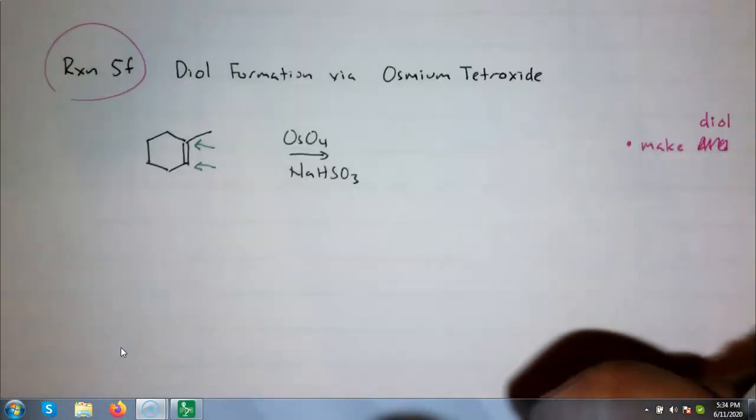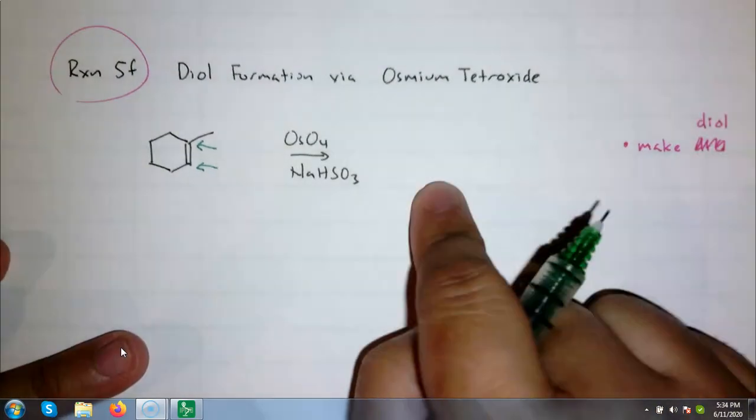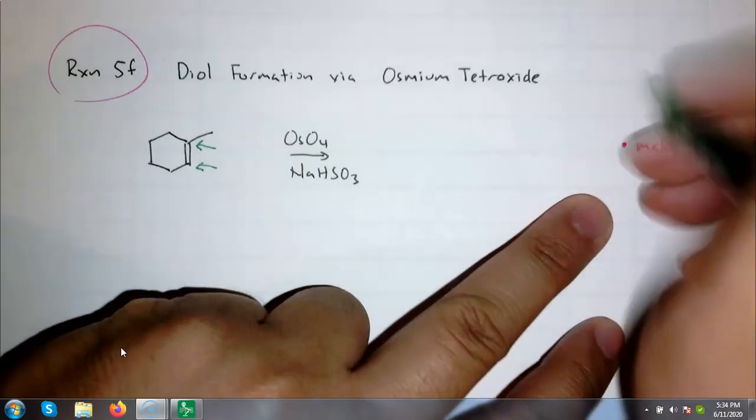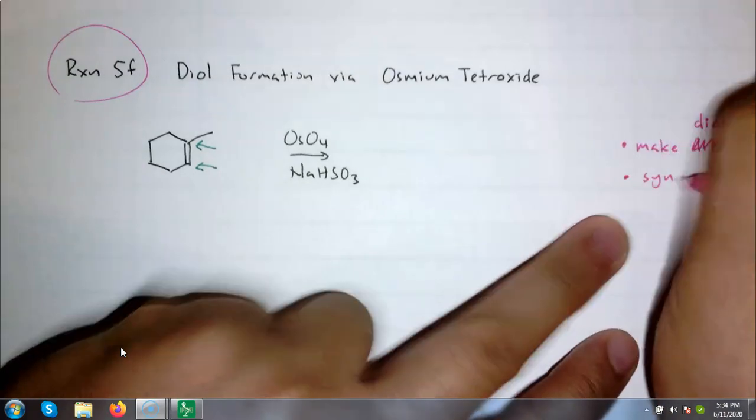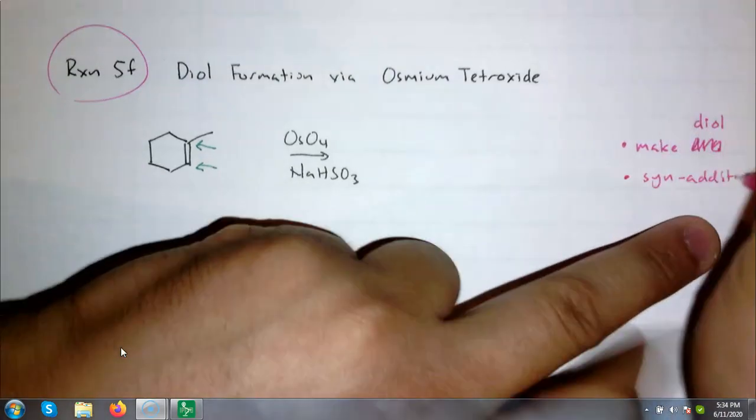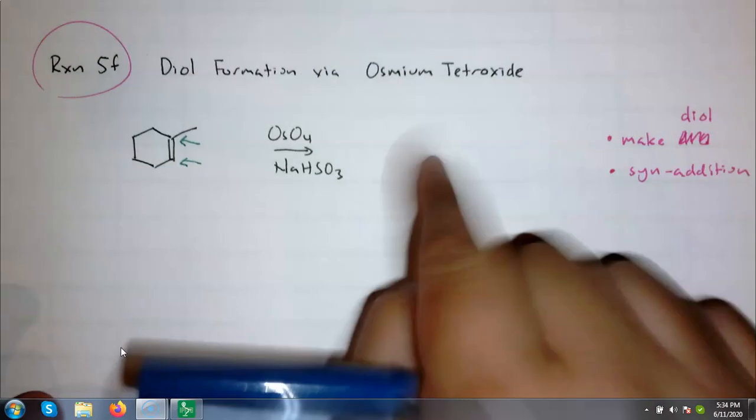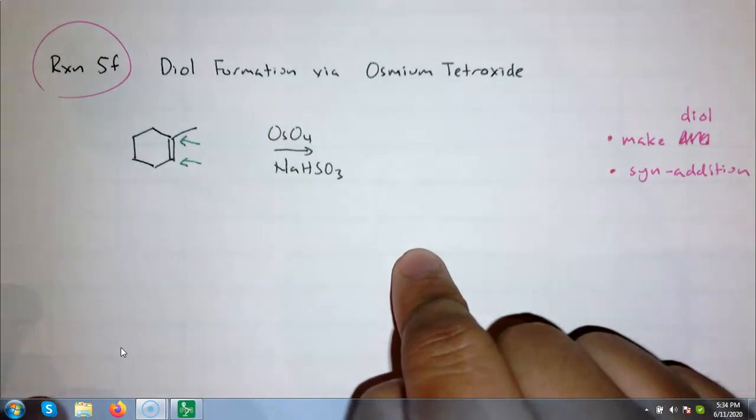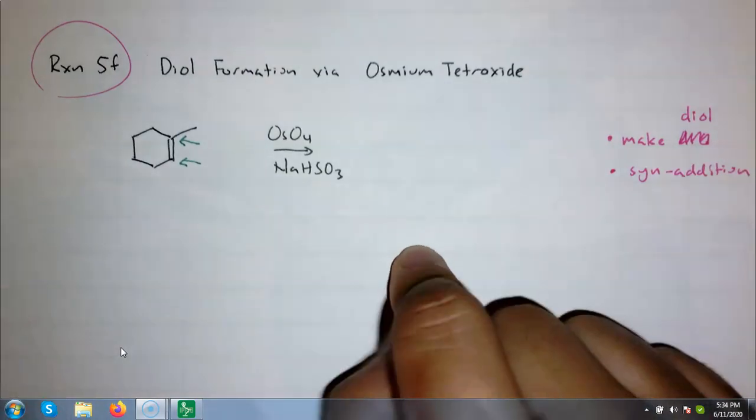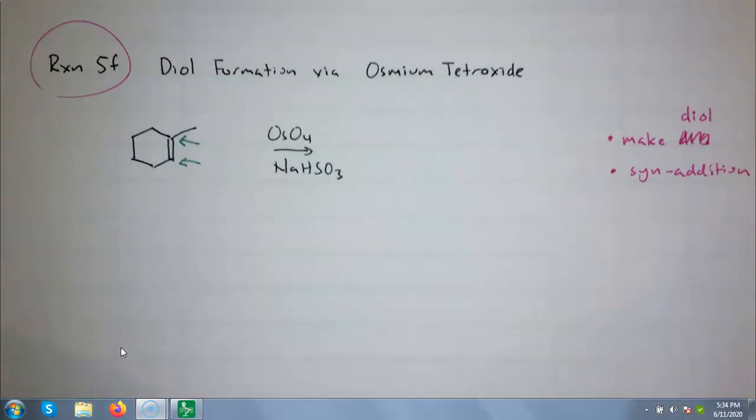First without stereochemistry, and then with stereochemistry. So this is diol formation. I like to name this reagent because I think it's a cool name. Dihydroxylation, osmium tetroxide, four oxygens. You're going to make diol. So diol means diol, or a molecule with two OH groups. I bet you can predict the two OH groups will be on the two carbons of the double bond.